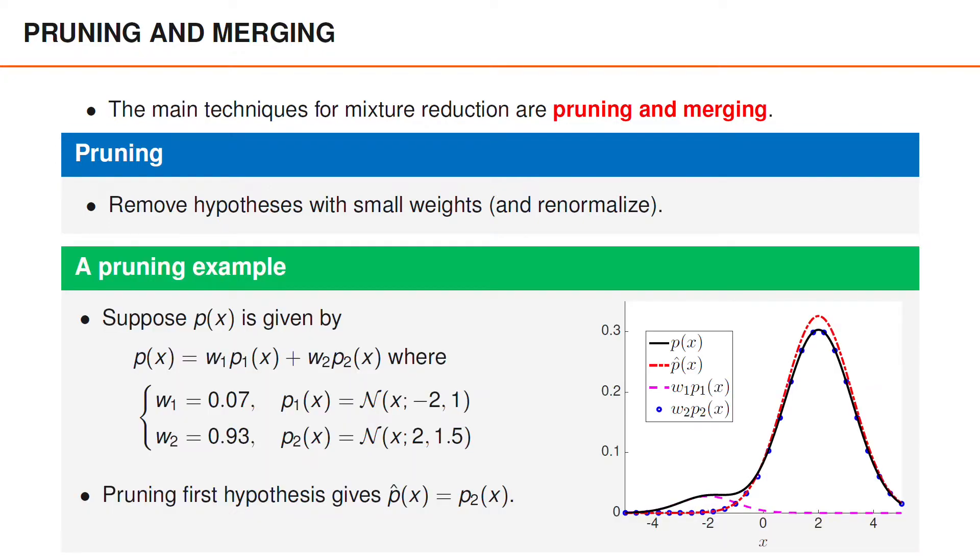For instance, suppose we have a Gaussian mixture with two components, where the first has the weight 0.07 and the second has the weight 0.93. If we want to approximate this density as Gaussian, we could prune the first hypothesis and set p hat of x to the density p2 of x, which is the density given hypothesis 2.